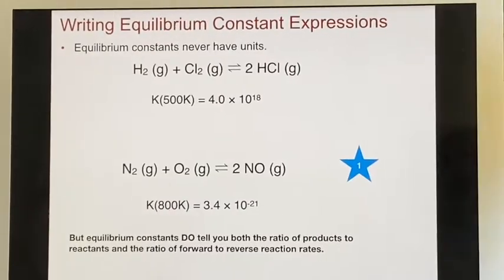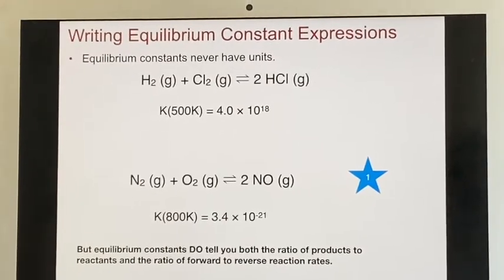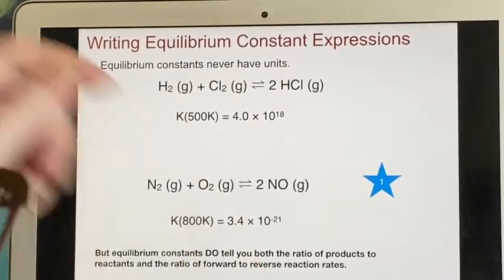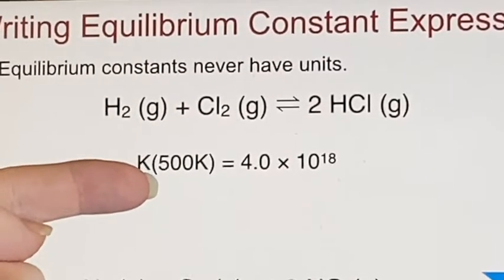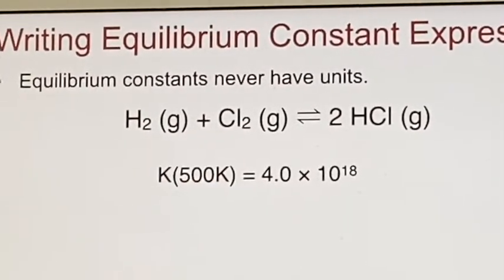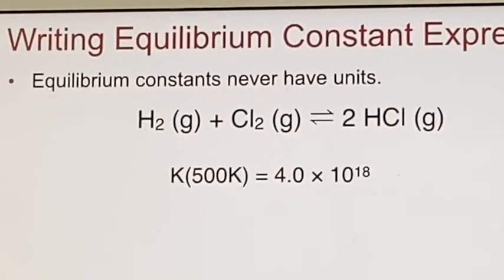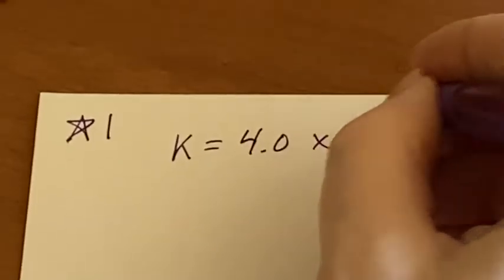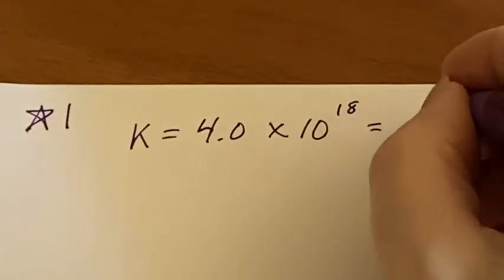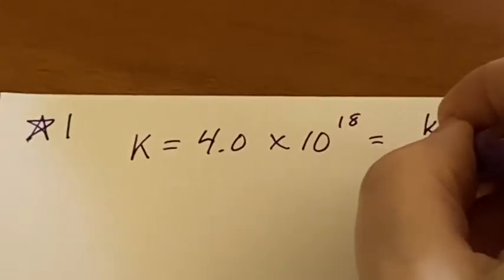So equilibrium constants never have units. We have a value here of K at 500 Kelvin, and we're told that it's 4.0 times 10 to the 18th. What does it stand for? Well, let's write down what we said it was. It's Kf over Kr. That's definitional.